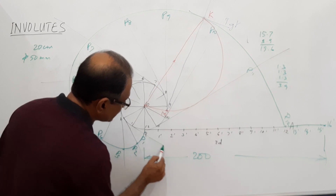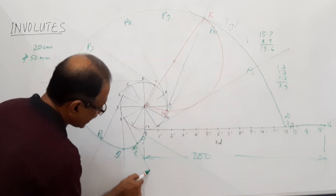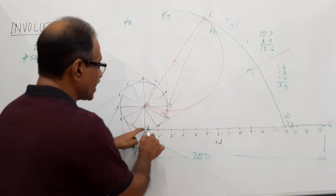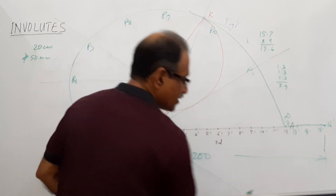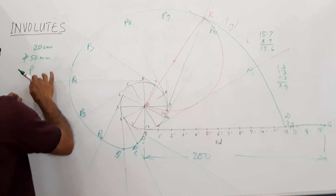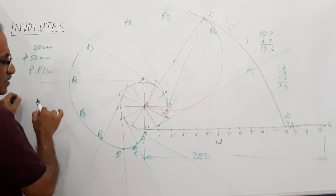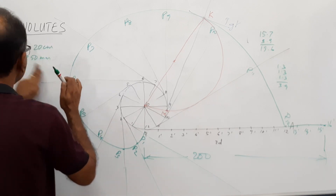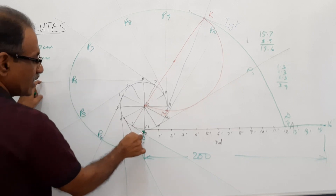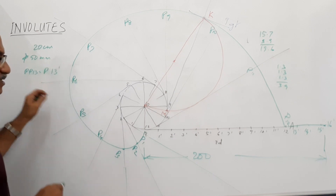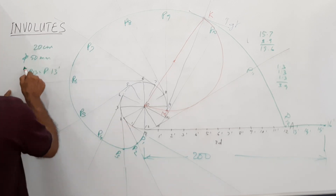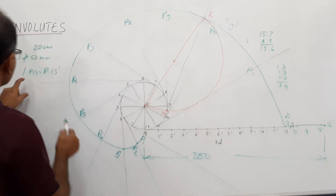Now, what do you have to do? Extend this tangent — extend the tangent at point 13 dash. On this tangent, you will mark P13 dash. So 13·P13 is equal to P13 dash.